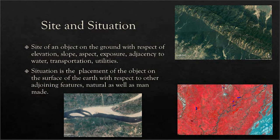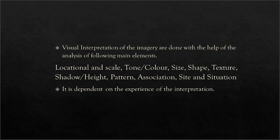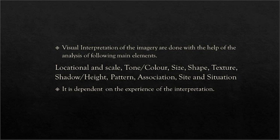So we can use association, site, and situation for better understanding and interpretation of imagery. These are the elements to focus on in visual image interpretation. Let us revise them: they are location and scale, tone or color, size, shape, texture, shadow, pattern, association, and site and situation. These are the elements that we have to observe and use for visual image interpretation. Always remember that the quality of interpretation is very much dependent on the experience that an interpretator or analyst has, because over time the quality of interpretation increases and a person becomes a better interpretator as they gain experience. With this, I am concluding. Thank you.